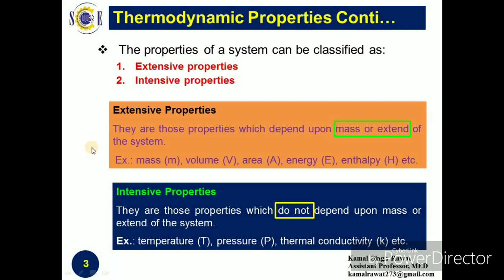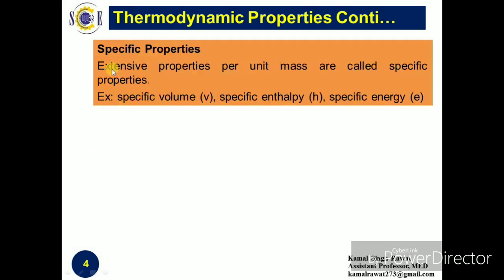Students are often confused between extensive and intensive properties. To avoid such confusion, remember that the word 'extensive' comes from 'extent,' which means size — so extensive properties depend upon the size of the system. Generally, extensive properties are denoted by capital or uppercase letters and intensive properties by small letters. However, mass is an exception in extensive properties, and temperature and pressure are exceptions in intensive properties. Apart from extensive and intensive properties, there is another category called specific properties. If we define an extensive property per unit mass, it is known as a specific property.